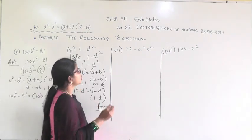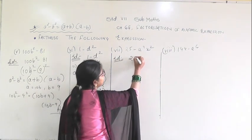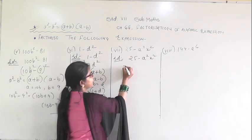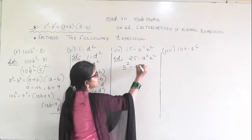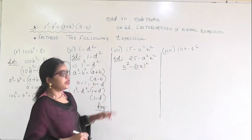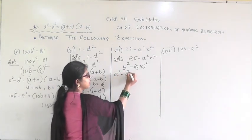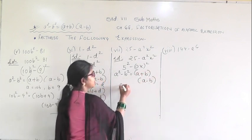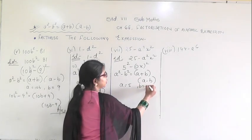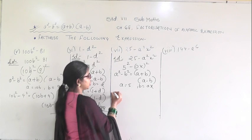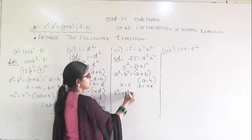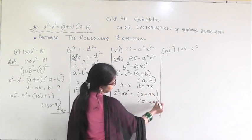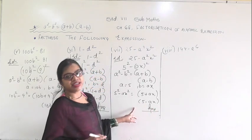In the next question you are given 25 minus a squared x squared. For 25 I can write 5 squared, and ax becomes (ax) squared. So this is in the form of a squared minus b squared, giving (a plus b)(a minus b), where a equals 5 and b equals ax. Substituting, 5 squared minus (ax) squared equals (5 plus ax)(5 minus ax). This is the answer.